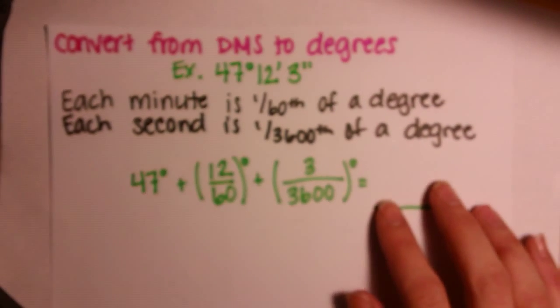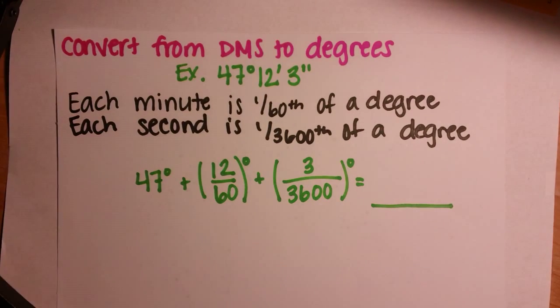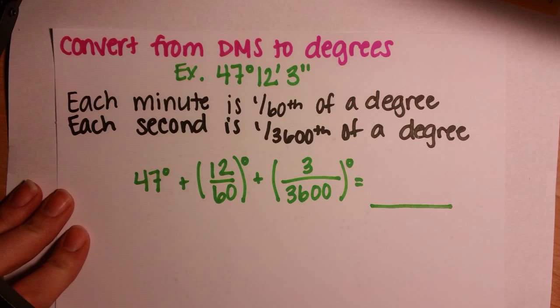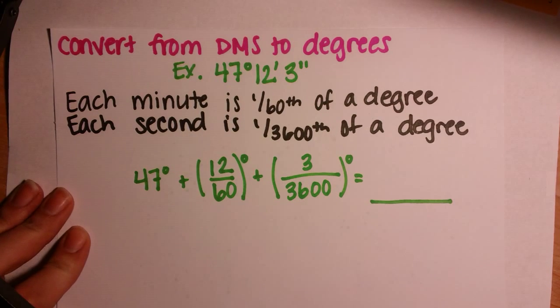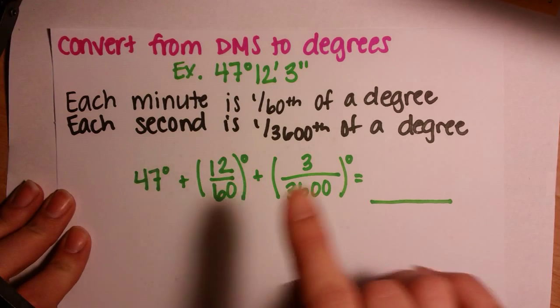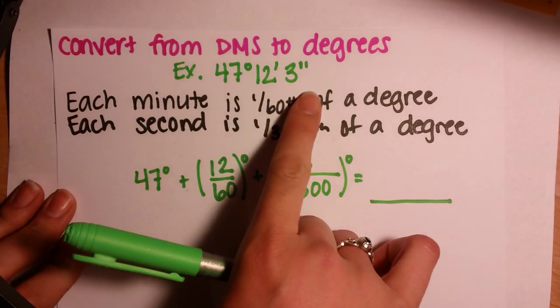Now, say we want to convert from degree minute seconds to degrees. For degree minute seconds, each minute is 1/60th of a degree, and each second is 1/3600th of a degree, which is like multiplying our minutes times our seconds. So we'll have, in this example, 47 degrees, 12 minutes, and 3 seconds.